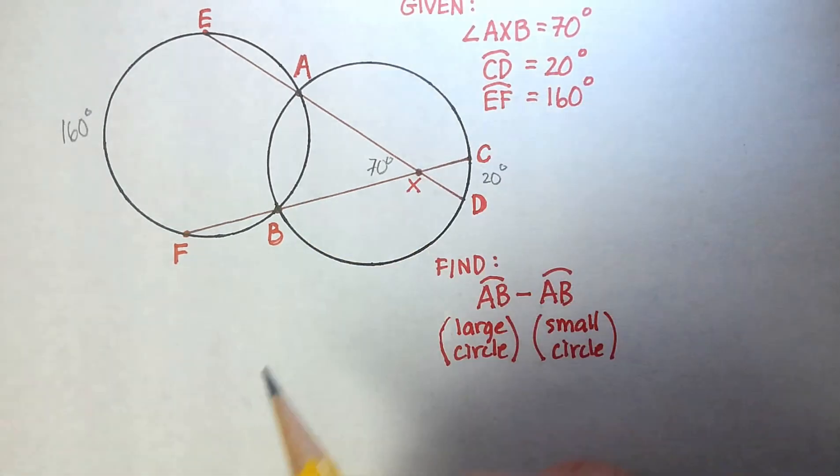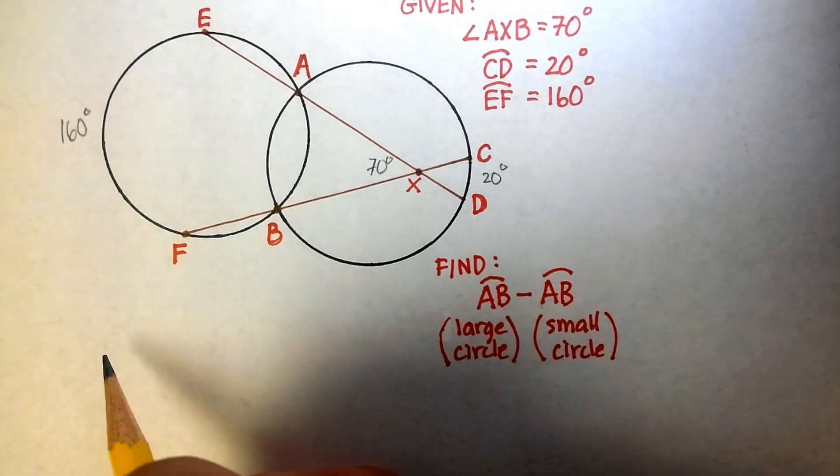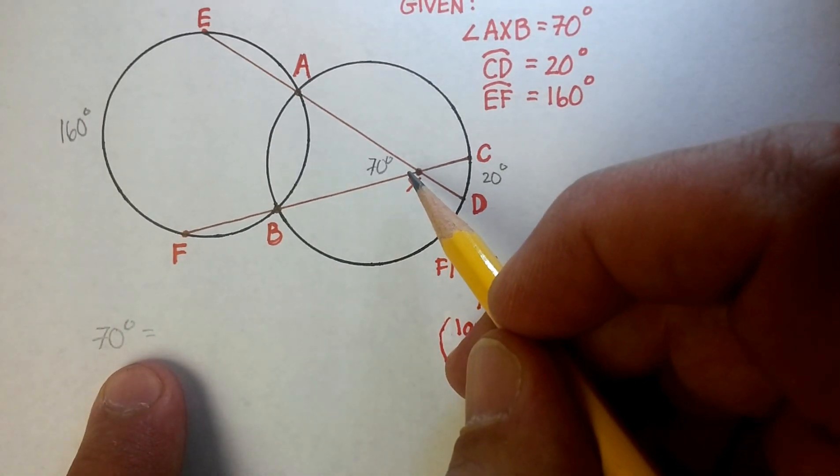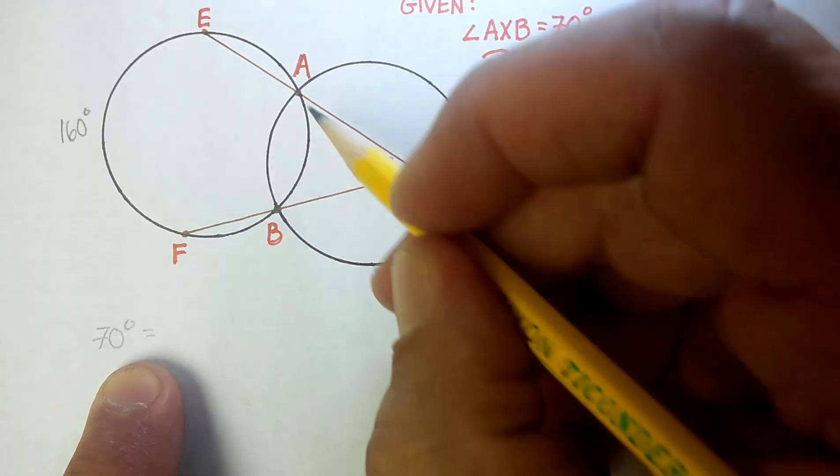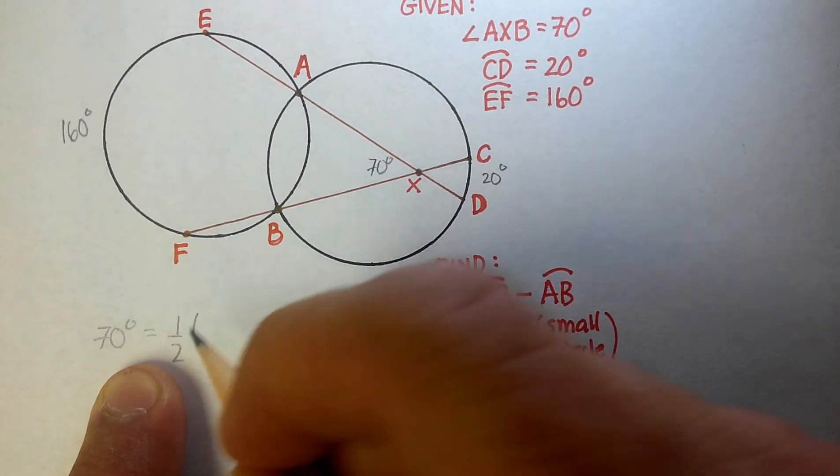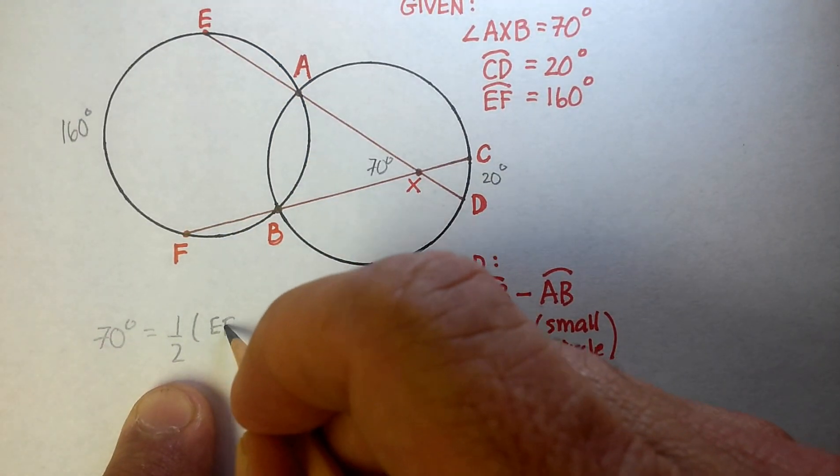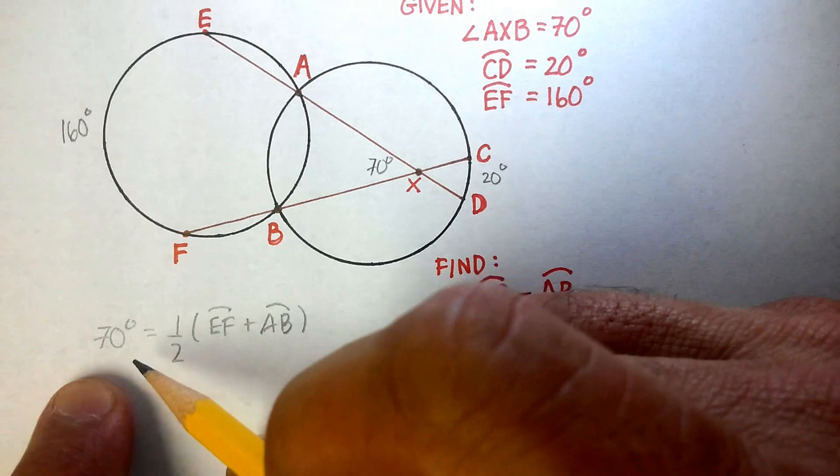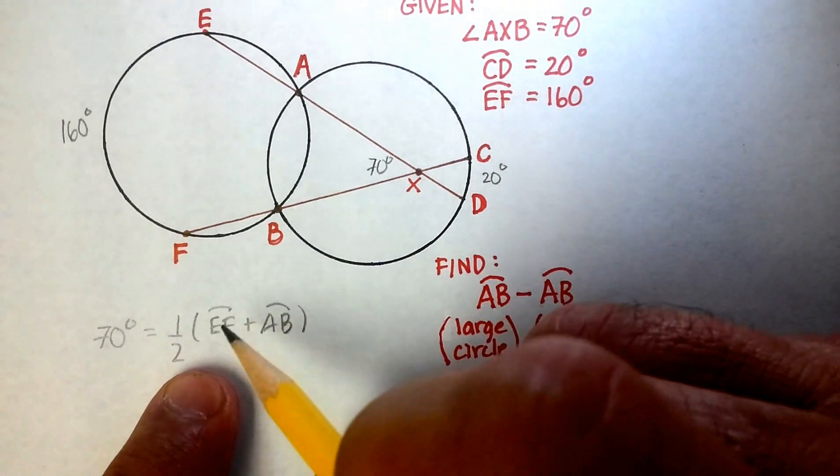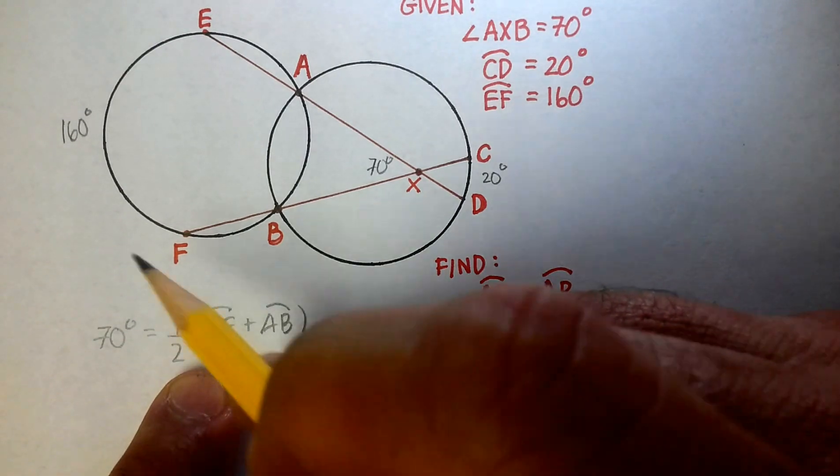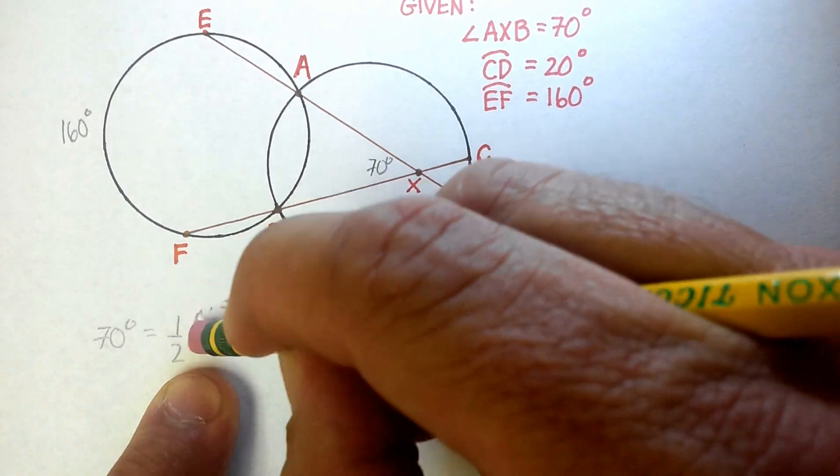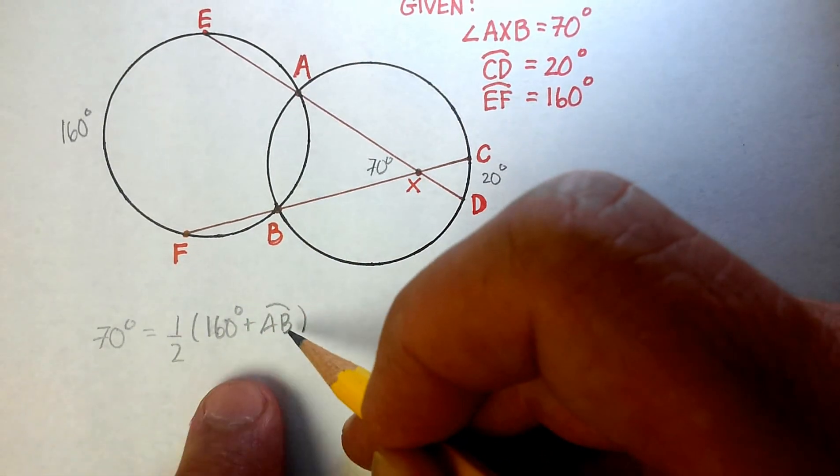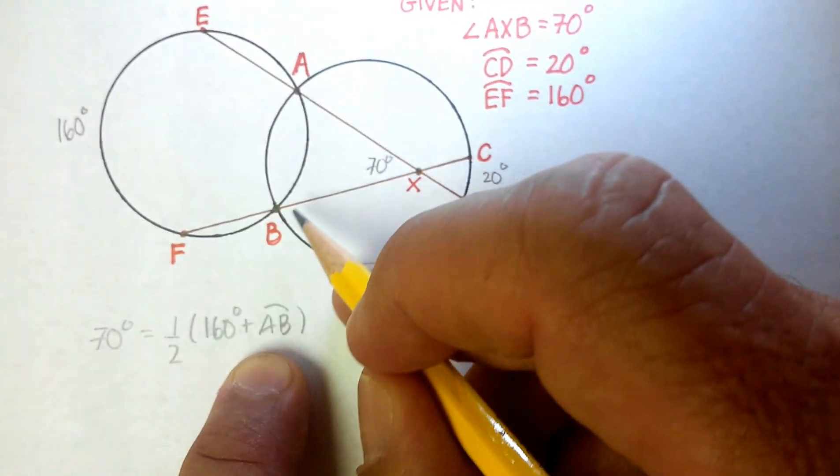And we should be able to find what the measure of this angle is right here. Because you'll remember that the measure of this angle, so let's just call that 70, should be equal to the sum of the two arcs, this arc and this arc, or one-half, I should say, one-half the sum of EF and AB. That's just one of the theorems that we talked about. Now, notice that I already put the angle measurement 70 in here. We can still put the measurement of the arc 160 into the EF.